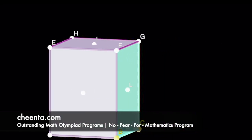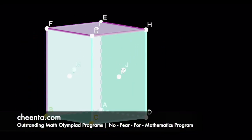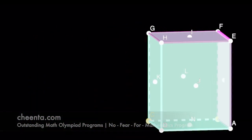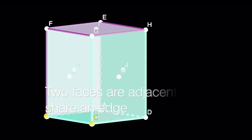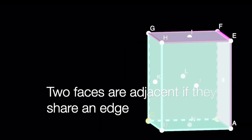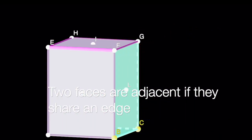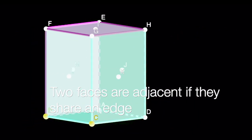Because they share this segment, this edge. Both of them share this common edge FE. That's why we say that they are adjacent.